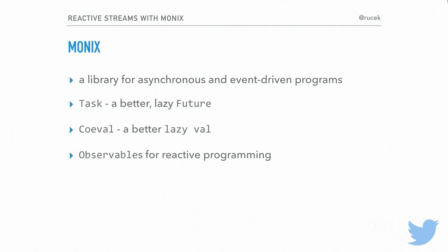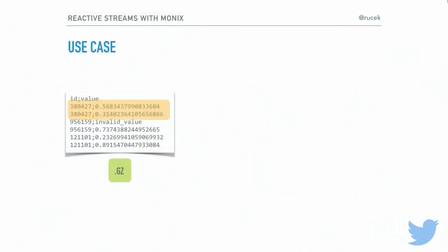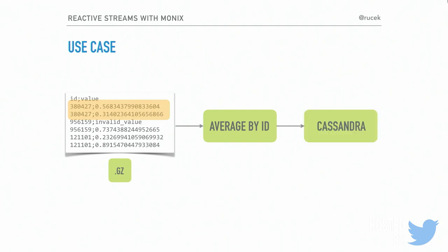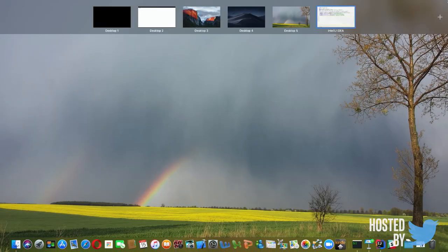Observables are the Monix abstraction for reactive programming. For the use case today: if you attended my talk last year on Akka streams, this is the same example with a different library. We have input data in gzipped CSV files with ids and values — two values per id. We want to average them (handling invalid values), then store the results into Cassandra.